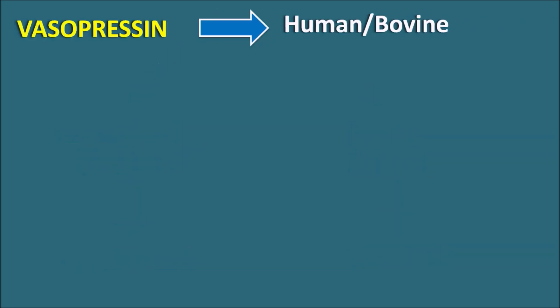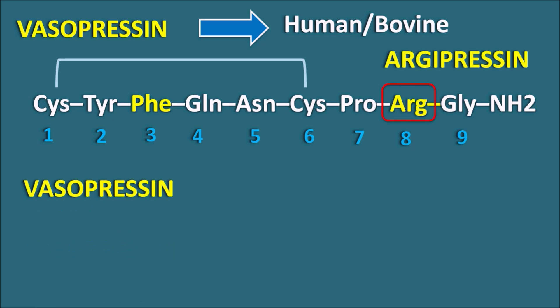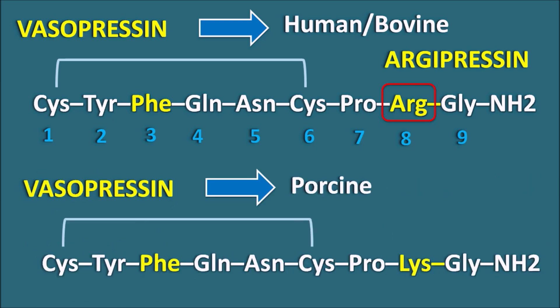Vasopressin derived from human or bovine source has arginine at the eighth position, so this vasopressin is argipressin. The vasopressin derived from porcine has lysine at the eighth position, so this is lypressin. Even though they have different amino acids at the eighth position, both argipressin and lypressin show the same activity as vasopressin and act on vasopressin receptors to produce anti-diuretic activity.